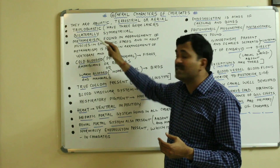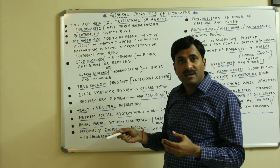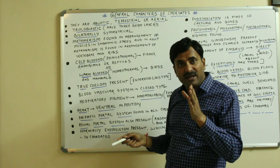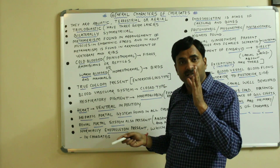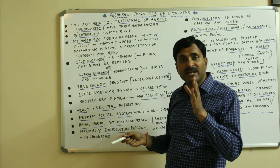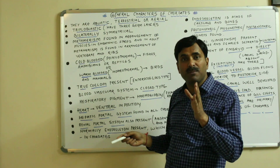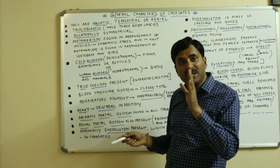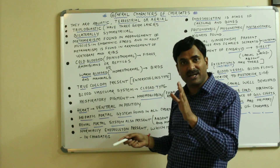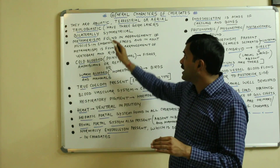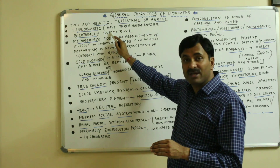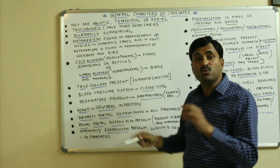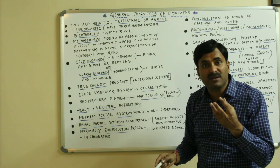They are bilaterally symmetrical, meaning they can be cut in a longitudinal plane and when cut, we get two equal parts, and one part is the mirror image of the other half. They are also having true segmentation.